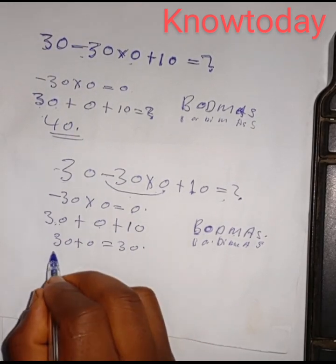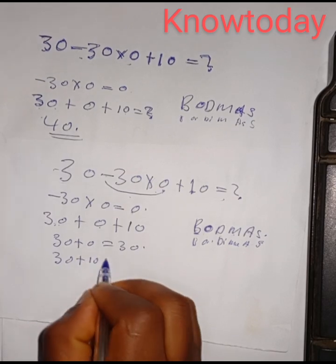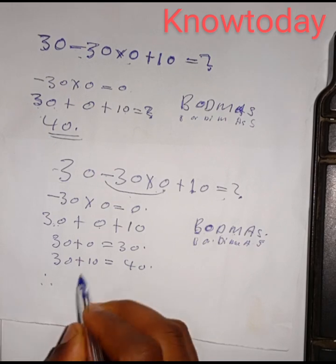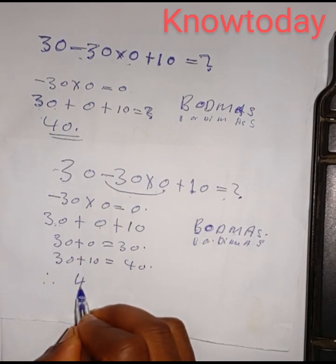So 30 plus zero equals 30, and then 30 plus 10 equals 40. Therefore, the correct answer to this quiz is 40.